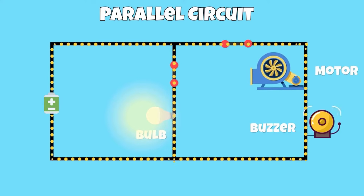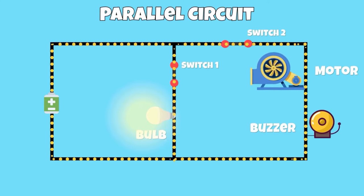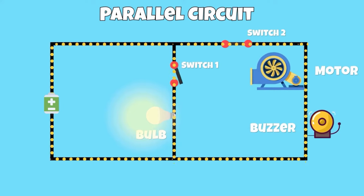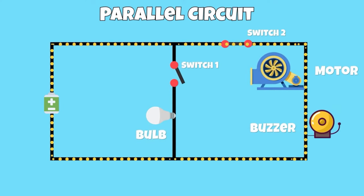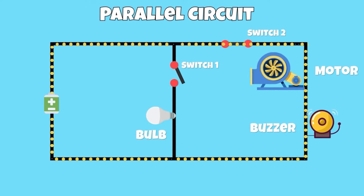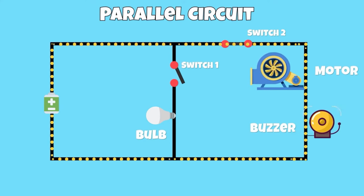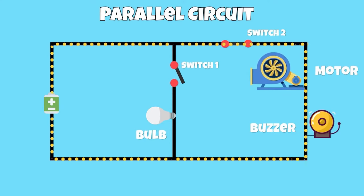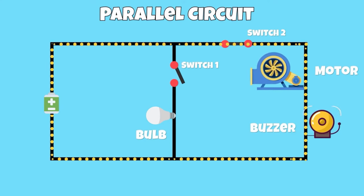Now, what would happen if we were to open switch one in this circuit? If we were to open switch one, we still have a complete path for electrical energy to flow through. Both the buzzer and motor will stay powered on, but the light bulb will turn off.